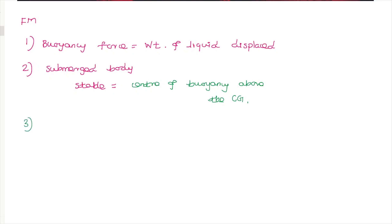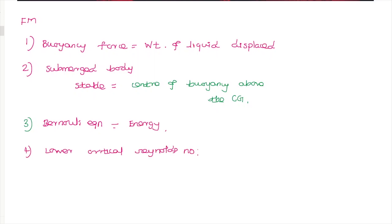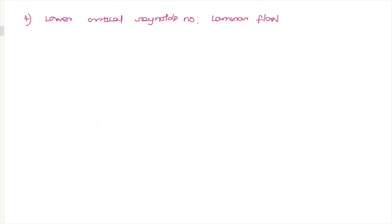The next question is on Bernoulli's equation, which is based on conservation of energy — that is the correct answer. The fourth question is about the lower critical Reynolds number: the correct answer is laminar flow, as the lower critical Reynolds number defines the region of laminar flow.